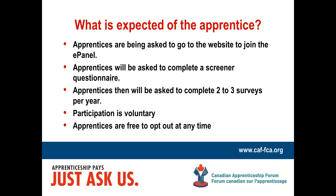After that point, apprentices are going to be invited to complete two to three additional surveys per year. RA Malatest and Associates manages several other ePanels and they feel this is an appropriate number of surveys. The surveys will be short, only ten minutes in length, and it will keep people engaged in the ePanel. They'll feel like they've had opportunities to provide feedback, but at the same time it's not going to make people feel overwhelmed. Participation in the ePanel is voluntary and apprentices are free to opt out at any time — if they decide they don't want to complete the surveys anymore, they won't get any more requests.